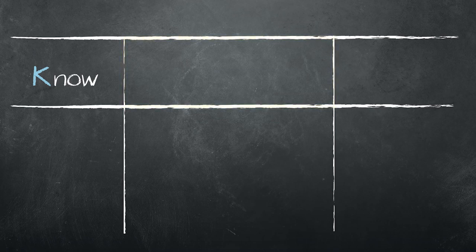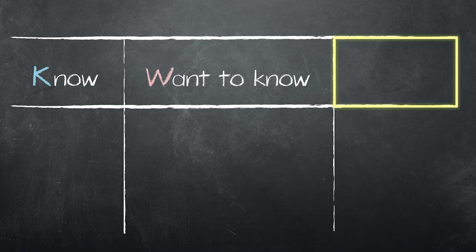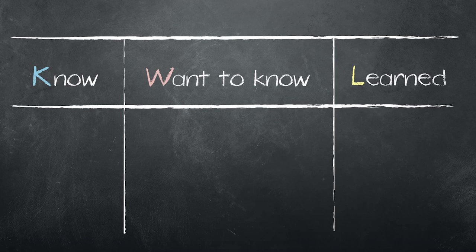Above the middle column, we write WANT to know. That's the W. And above the right column, we write LEARNED. That stands for the L.